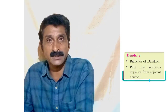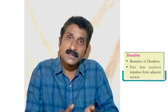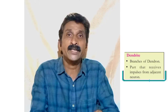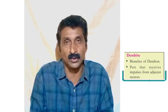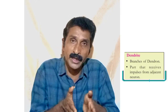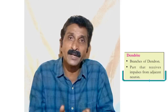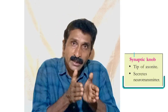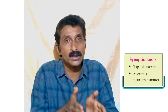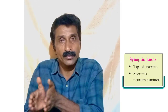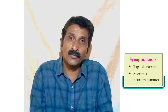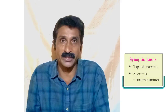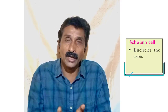The next part of the neuron is dendrites. Dendrites are the branches of dendron, and they receive messages or impulses from the adjacent neuron. The fifth part of the neuron is the synaptic node. The synaptic node is the tip of the axonite, and it secretes chemical substances called as neurotransmitters.